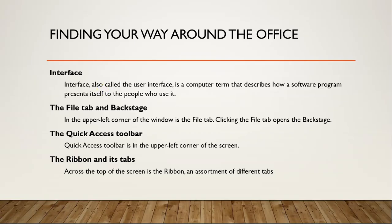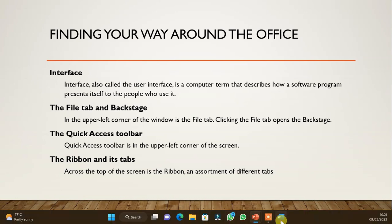Now let's talk about finding your way around the Office interface. We are going to look at the user interface — a computer term used to describe how the program presents itself to users. We'll look at the File tab and the backstage view, which is in the upper left corner. Clicking the File tab brings the backstage view. We'll also look at the backstage view bar and the ribbon and its tabs.